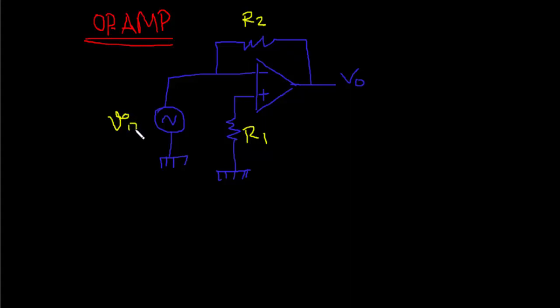And here is the V in. V input. Is this inverting or non-inverting? Here is the negative, here is positive. This is the inverting op-amp because in the negative part the voltage source, we are giving the input in the negative part. So this is inverting.